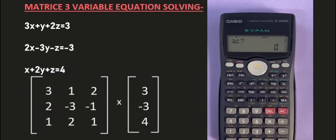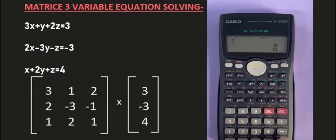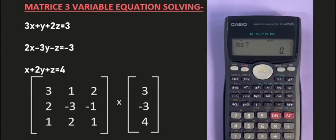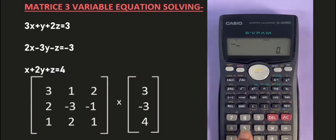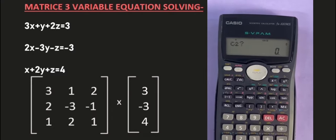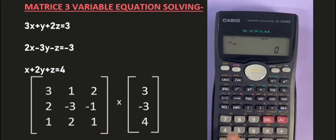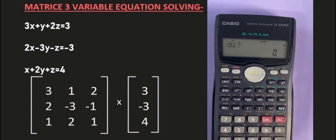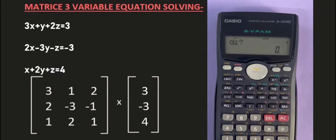To the next row, A2 is equal to 2, B2 is equal to minus 3, C2 is equal to minus 1, and D2 is equal to minus 3.